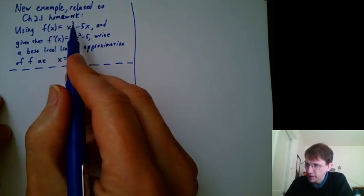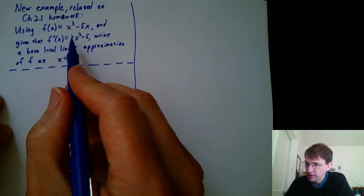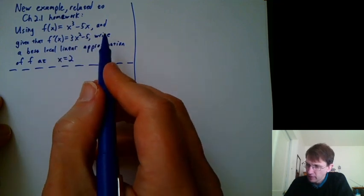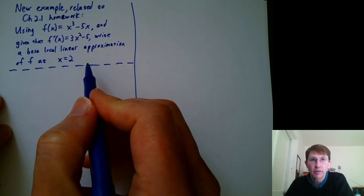Using f(x) = x³ - 5x, and given that f'(x) = 3x² - 5, write a best local linear approximation of f at x = 2.